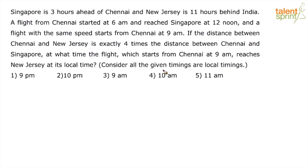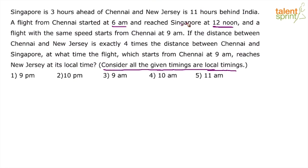Consider all the given timings as local timings. This point is very important — all given timings are local timings. For example, a flight from Chennai started at 6 am — this is 6 am Chennai or India timing. Reaching Singapore at 12 noon means 12 noon local time of Singapore. Similarly, a flight with the same speed starts from Chennai at 9 am means 9 am Chennai timing.